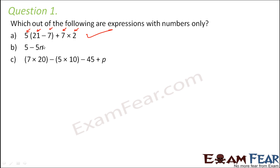5 minus 5n, here you have a variable n. So this is not an expression with numbers. 7 into 20 minus 5 into 10 minus 45 plus p. So p again is a variable. So this is also not an expression with numbers only.